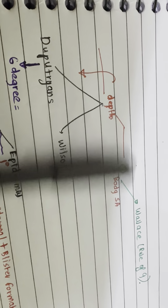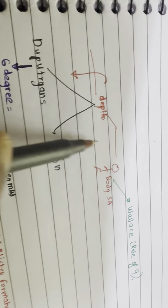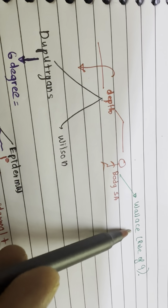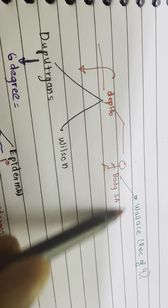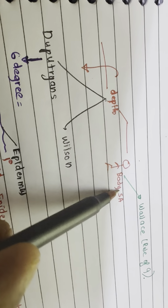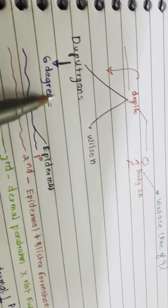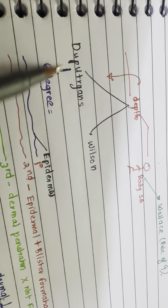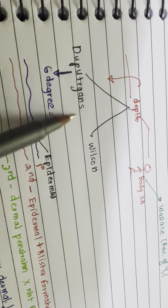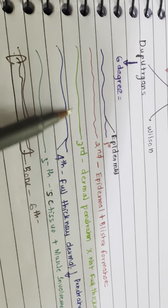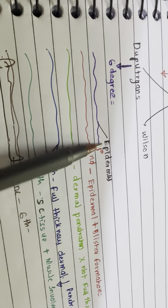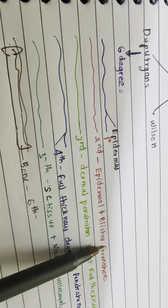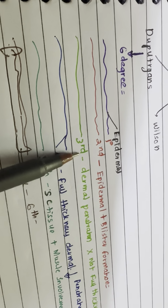Classification of burns according to depth and body surface area. According to the Rule of Nines and Dupuytren and Wilson classification: first degree burns involve the epidermis; second degree burns involve the epidermal layer with blister formation.